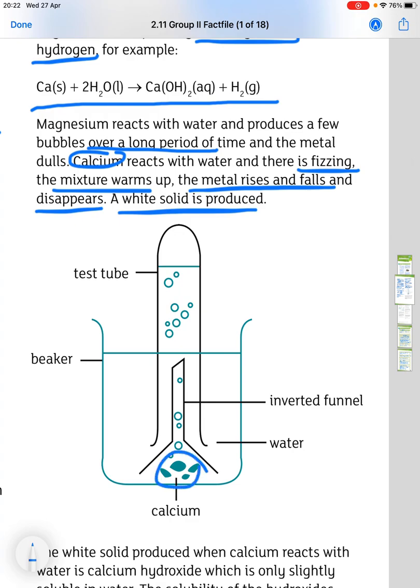You see here the calcium would be placed underneath an inverted funnel, submerged in water in a beaker. And a test tube full of water is placed over the top, over the spout of the funnel. And the test tube then will fill with hydrogen gas.